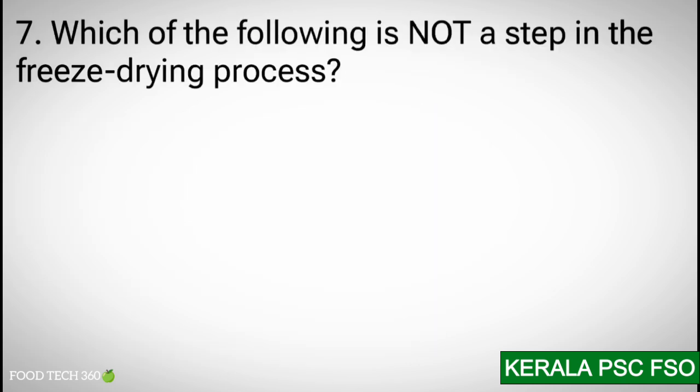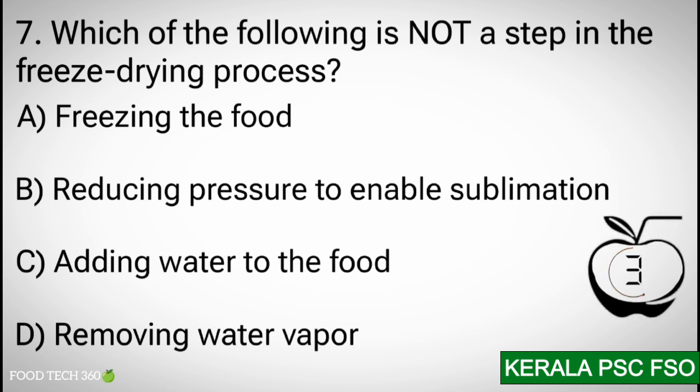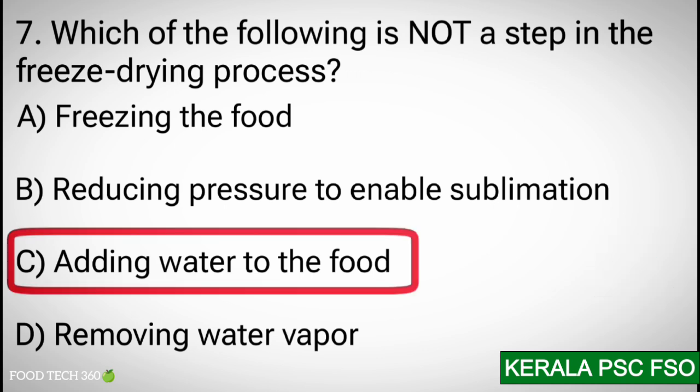Question number 7: Which of the following is not a step in the freeze drying process? Options: A) Freezing the food, B) Reducing pressure to enable sublimation, C) Adding water to the food, D) Removing water by sublimation. Correct answer: C) Adding water to the food.